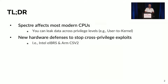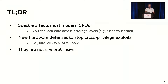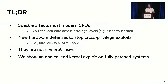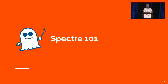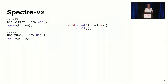Among these mitigations, there were two interesting ones: Intel IBRS and ARM CSV2. With our work, we're trying to answer the question: do these mitigations actually work? We discovered that they're not as comprehensive as they should be, and thanks to this we managed to show an end-to-end kernel exploit on fully patched systems at the time.